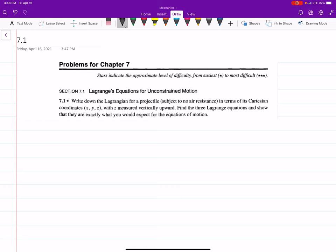So this is 7.1 in Taylor's book. I'll probably go back to chapter 6, I know it's not in order, but I want to do some chapter 7 problems since my exam will, I'm assuming, mostly be chapter 7.